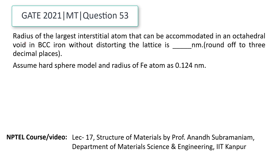Here, it is asked to find the radius of the largest interstitial atom that can be accommodated in an octahedral void in BCC iron without distorting the lattice. They also assume a hard sphere model, and the radius of an iron atom is 0.124 nanometers.